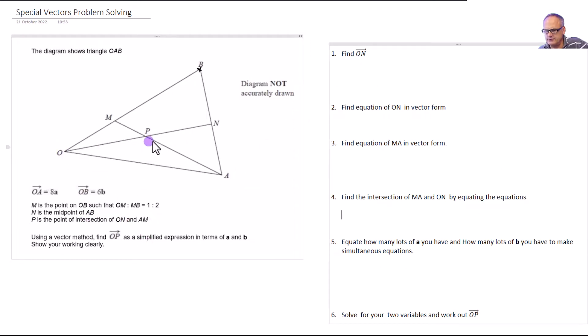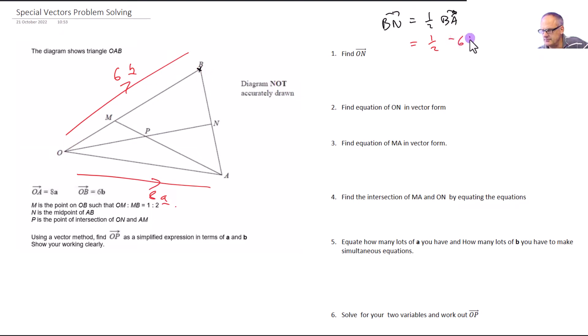So the first thing we want to do is we want to find ON. We're going to use OB plus BN. Now we're going to find BN because it's a half of BA. So BN will equal a half of BA because we are told that N is the midpoint of AB. So putting the other values into this, we know that's 6B and we know that that is 8A. Therefore BN is going to be half of BA, but BA is equal to minus 6B because it's going in the opposite direction, plus 8A. So we know that that's going to be equal minus 3B plus 4A.